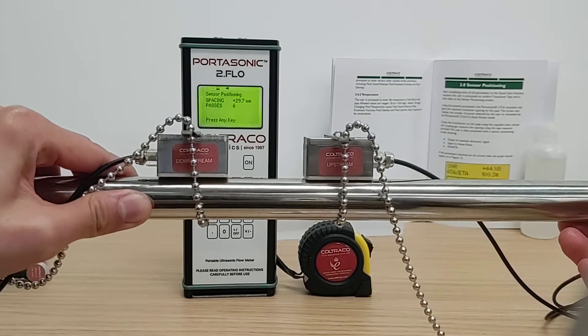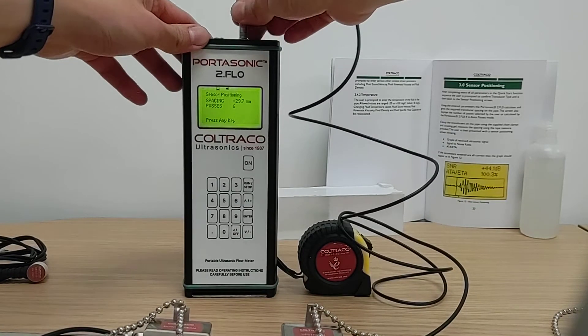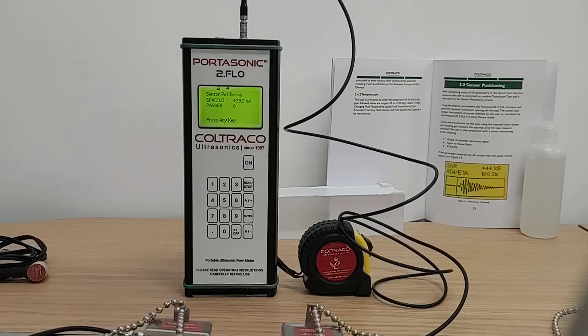Once you have done the measurement, connect the sensor connectors onto the Portasonic two-point flow and then you can press the next key.